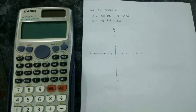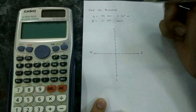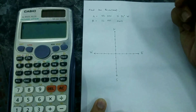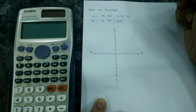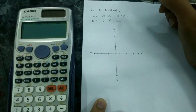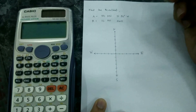Here's an example of how you find the resultant of two forces. We have force A: 50 kN, north 30 degrees west, and force B: 10 kN east.